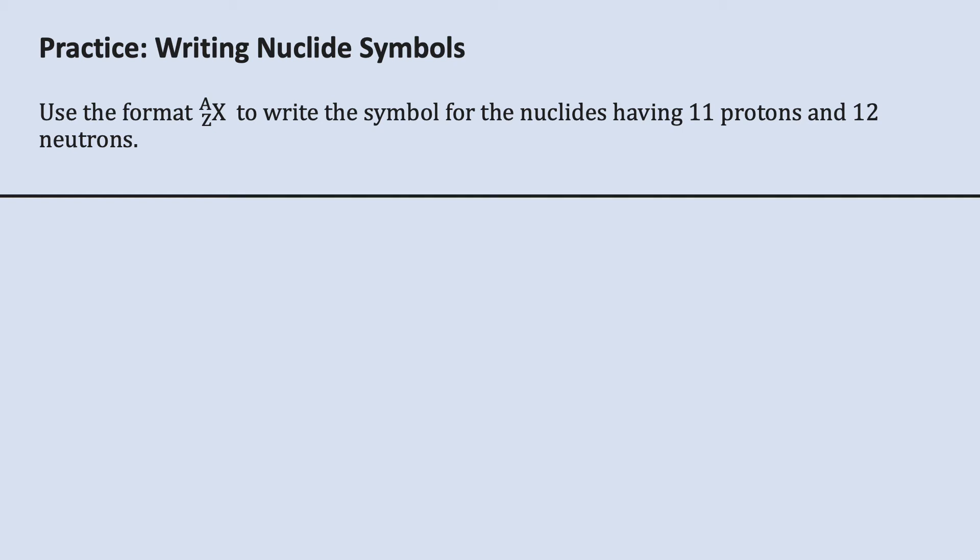In this video, we'll go through several worked examples related to Module 2. The first practice problem is about writing nuclide symbols for a specific isotope of an element.